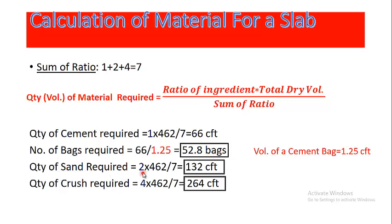For calculation of sand, we use 2 × 462 ÷ 7, giving us 132 cubic feet. Similarly, for coarse aggregate or crush, we use 4 × 462 ÷ 7, which gives us 264 cubic feet.